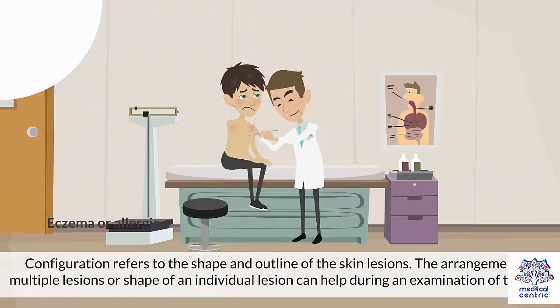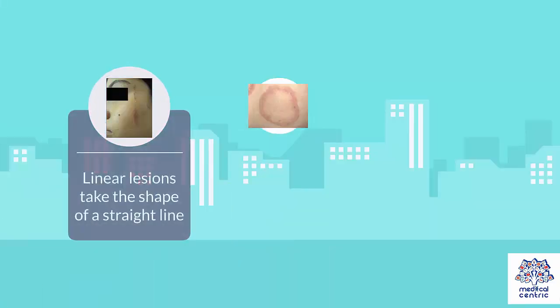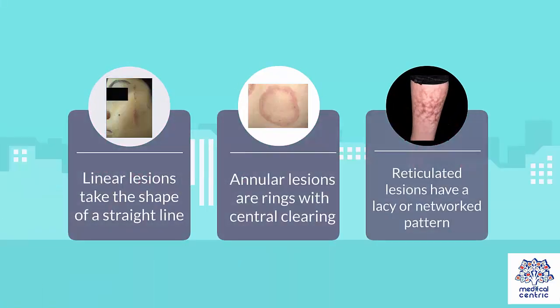Configuration refers to the shape and outline of the skin lesions. The arrangement of multiple lesions or shape of an individual lesion can help during an examination of the skin. Linear lesions take the shape of a straight line. Annular lesions are rings with central clearing. Reticulated lesions have a lacy or networked pattern.